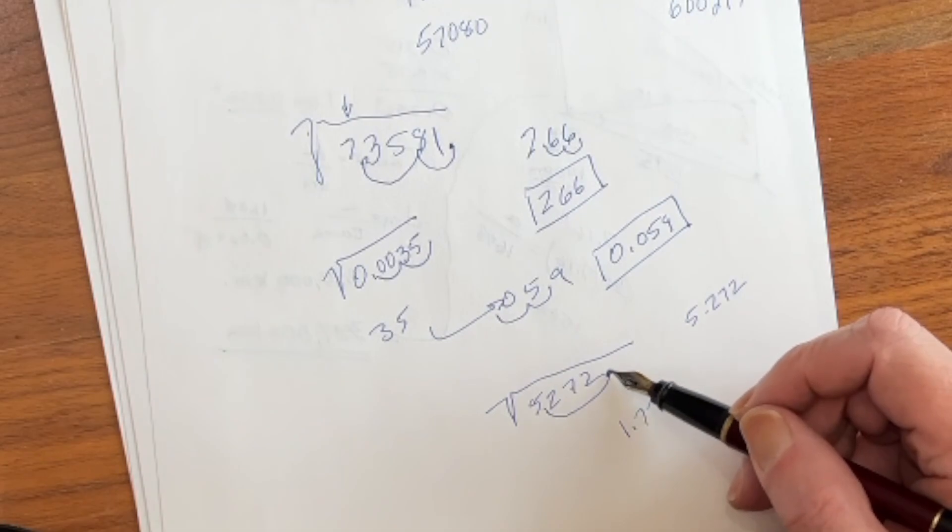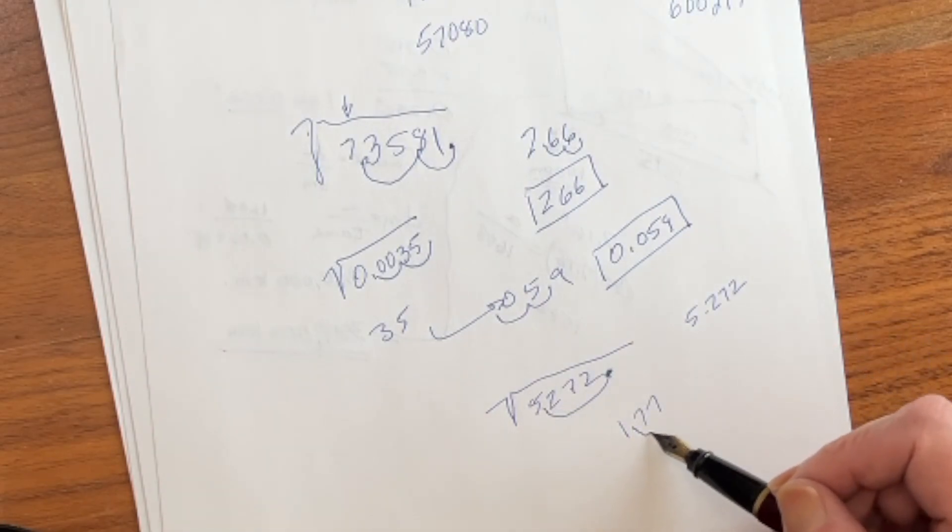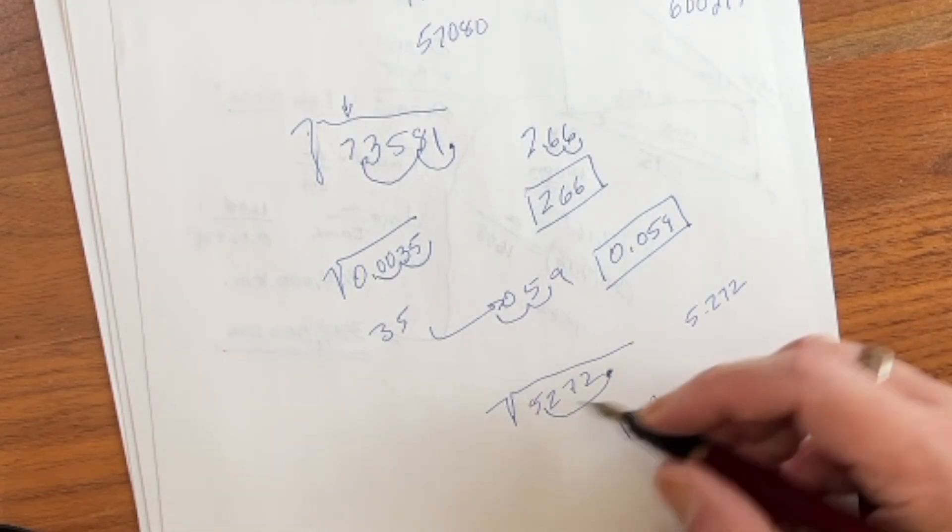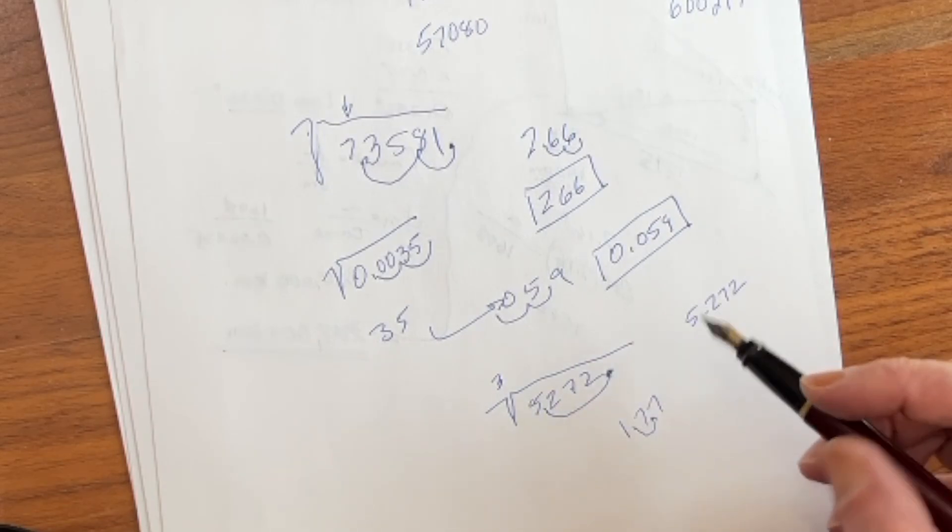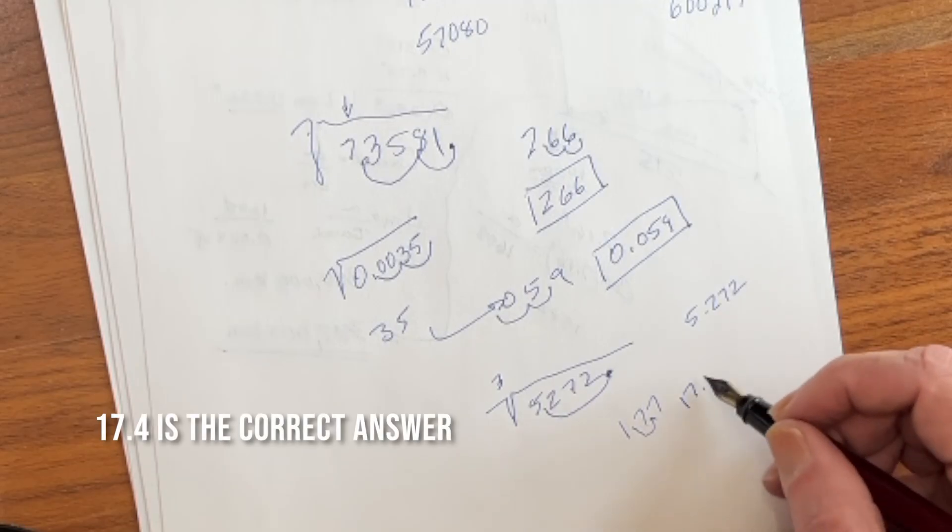Okay, what do we do with the decimal place? Well, we had to move it this way, three. We're going to have to move it back that way, one. So the cube root of 5,272 is going to be 17.7.